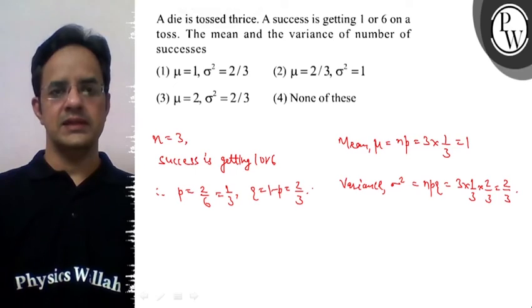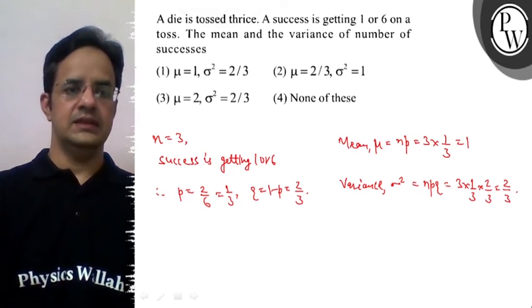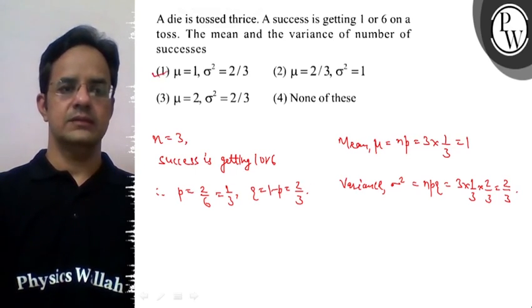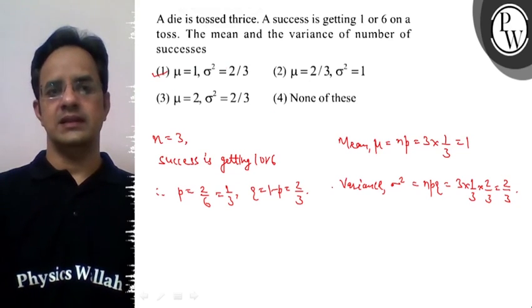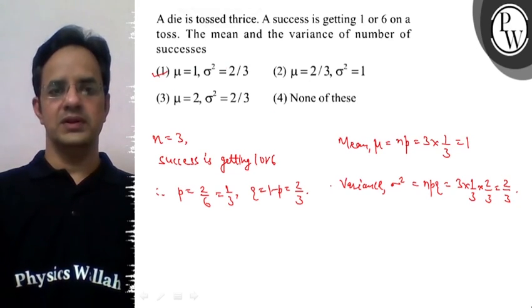So the final answer to this problem is option 1, that the mean is 1 and the variance is 2 by 3. Hope you understood it well.